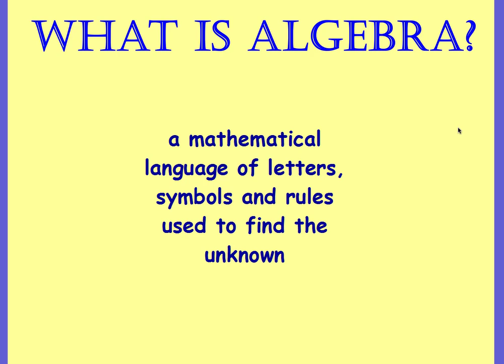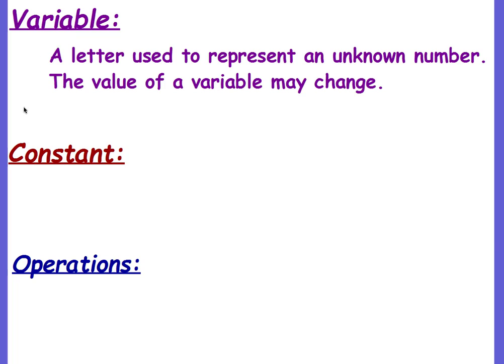So a variable - a variable is a letter used to represent an unknown number. The value of the variable may change. Okay, so if you don't know what a number is, then you substitute a variable or a letter to represent that number in your algebraic expression or equation. And it can be any letter.